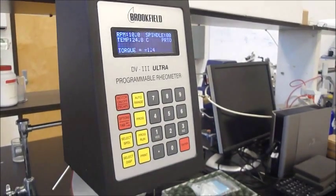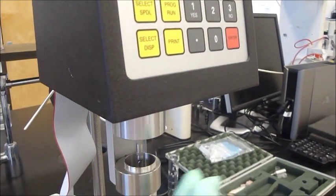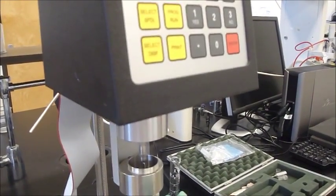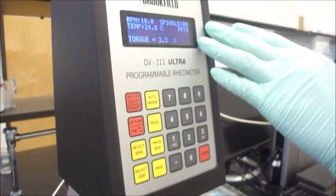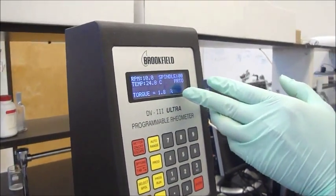So the spindle will rotate at a speed of 10 RPM. And on the screen, you can see the torque here.